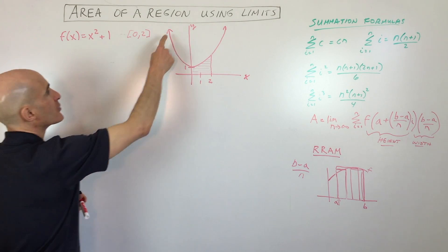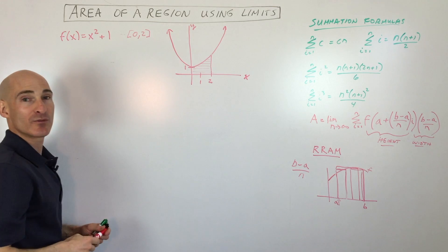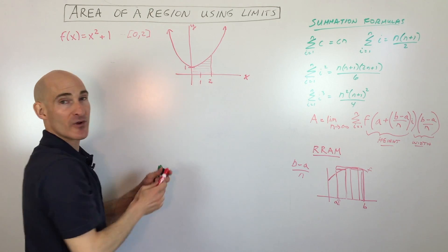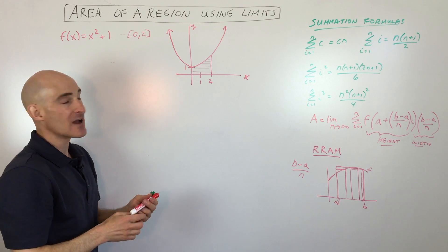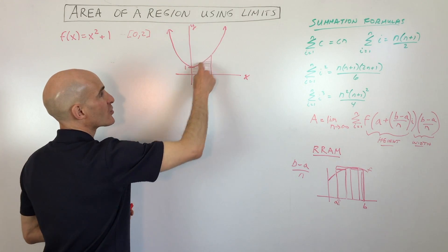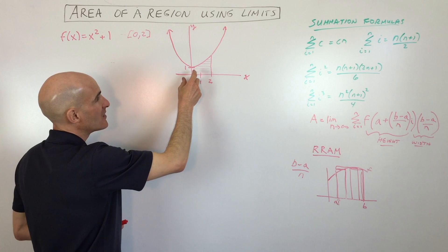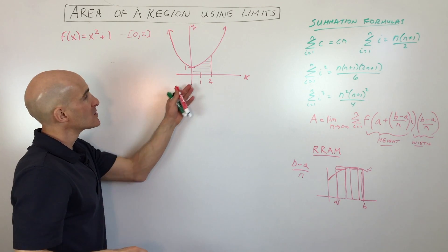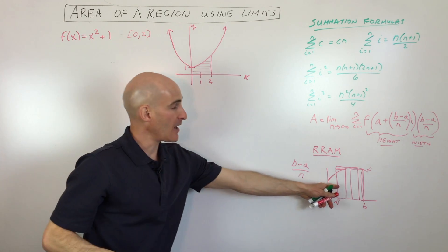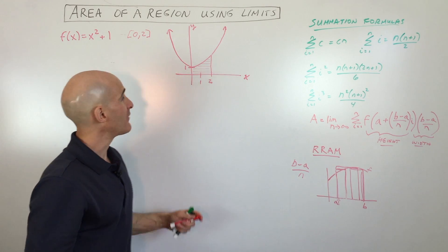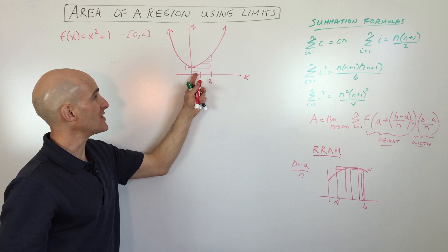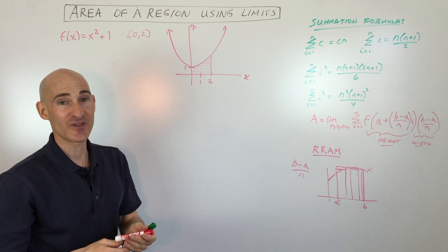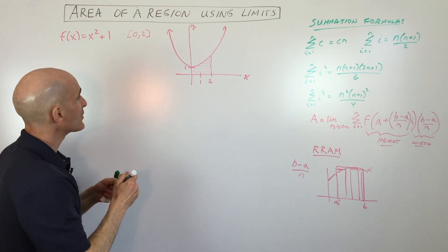Say we want to find the area underneath this curve y equals x squared plus one, from zero to two. I've shaded it in — we want to find that area. It's not easy to find this area because of the curved portion; it's not like a trapezoid, triangle, or rectangle. So we're going to divide up the region into rectangles and find the limit as n approaches infinity, meaning these rectangles are getting thinner and thinner to find the exact area.